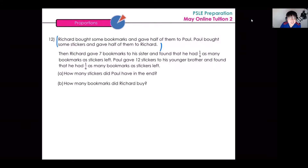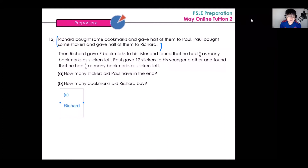The question says that Richard gave seven bookmarks to his sister and found that he had one over nine as many bookmarks as stickers left. I can express this relationship — one over nine — as a ratio. For Richard, the ratio of bookmarks to stickers is one to nine. But Richard gave seven bookmarks away, so his bookmarks are lacking seven.